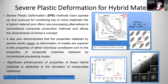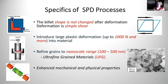What is severe plastic deformation? Let me give you specifics of these processes. First, during SPD the shape of the billet doesn't change after deformation, because the deformation mode is simple shear and can be repeated back and forth while keeping the shape the same. Second, SPD introduces large plastic deformation — up to 1000% and more — in the material. As a result of this very severe shear deformation, the grains are refined to the nanoscale range between 100 and 500 nanometers. These materials are called ultra-fine grain materials, UFG.